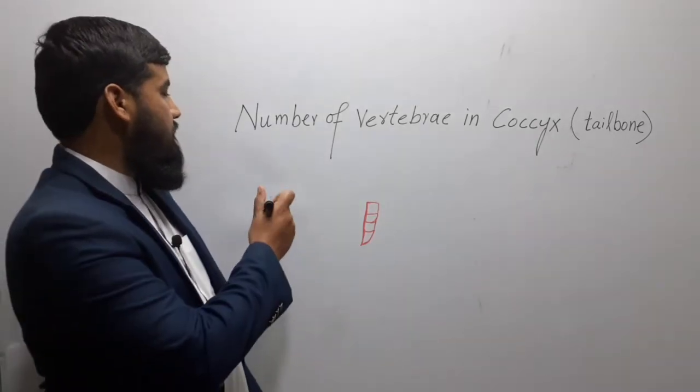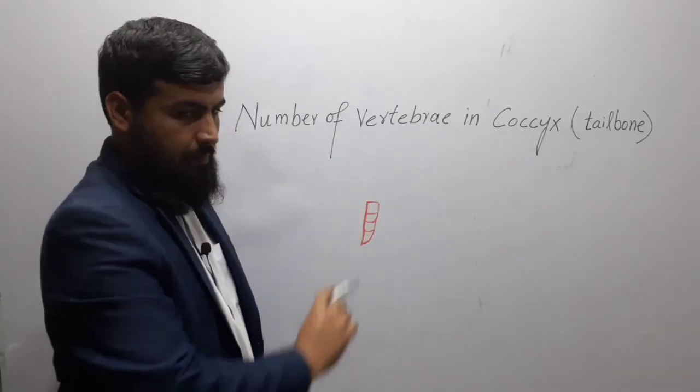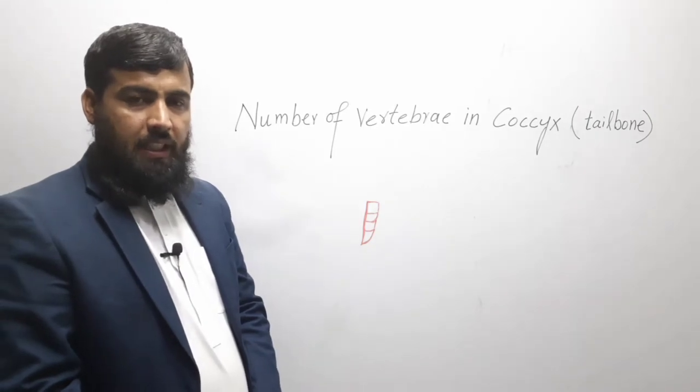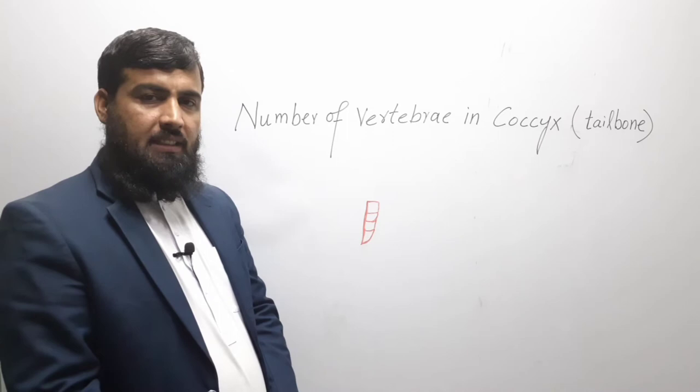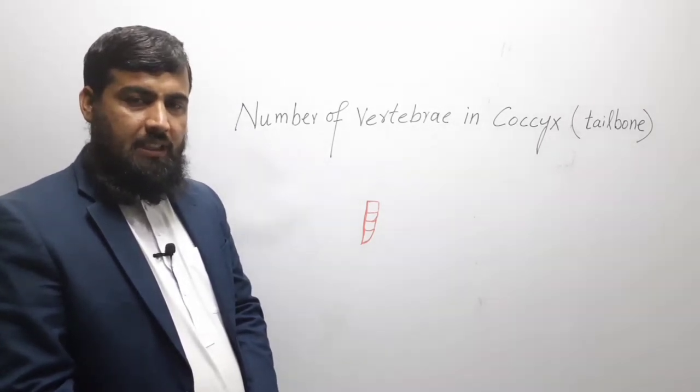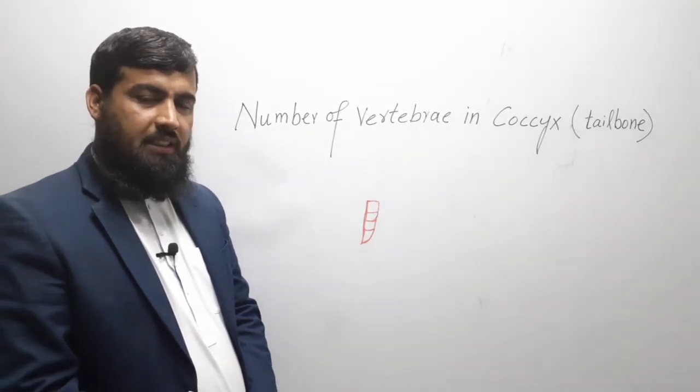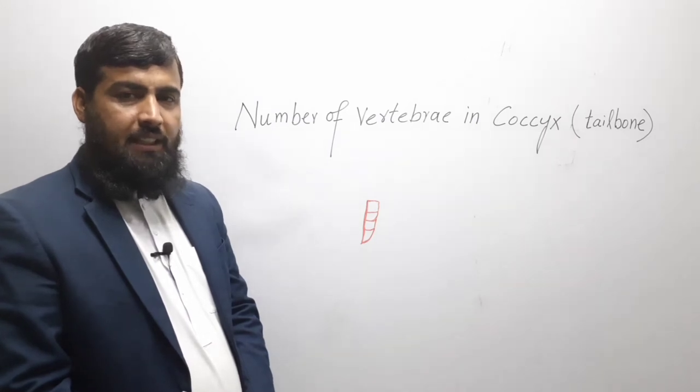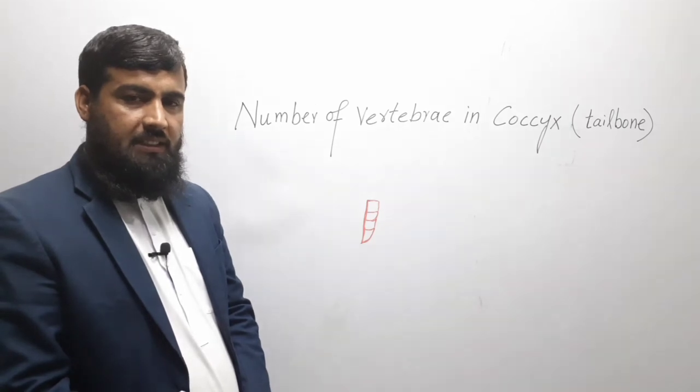The first one is the number of vertebrae in the coccyx or tailbone. Most individuals have four vertebrae in their coccyx, but some individuals have three vertebrae and others have five vertebrae in their coccyx.